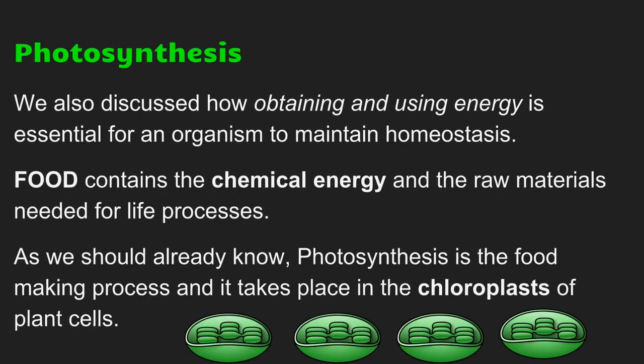Let's start with one we should be a little familiar with: photosynthesis. We discussed earlier in Part 1 how to maintain homeostasis, cells have to do several essential processes. Obtaining and using energy is one of these processes. Food contains the chemical energy and the raw materials needed for life processes. We know that plants are the only things that can make their own food. That process of food making is photosynthesis, and it takes place in the chloroplast of every plant cell.